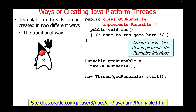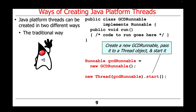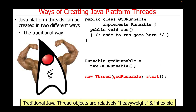An alternative way to implement a thread is to implement the Runnable interface. For example, create a new class called GCDRunnable, make an instance of the GCDRunnable class, pass that to a new thread object, and start that thread in order to invoke the runHook method.